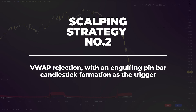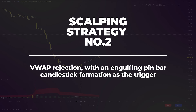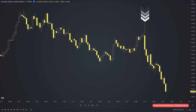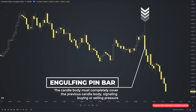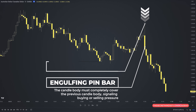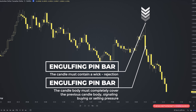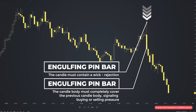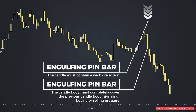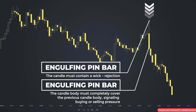Another powerful scalping setup is a VWAP rejection with an engulfing pin bar formation as the trigger. The engulfing pin bar is a hybrid of two candlesticks — a candle which is an engulfing candle but with a large wick. The candle body must completely cover the previous candle's body, signalling buying or selling pressure, and the candle must contain a wick. The wick shows the area of price that was rejected, and the implication is that price will continue to move in the opposite direction of the wick.